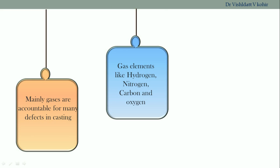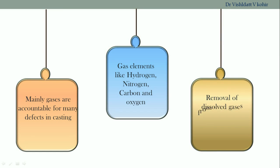If they are not removed, they are going to recombine to form their molecules in the solid phase of the metal. In doing so, they form defects like blowholes and pinholes. Therefore, it is necessary to remove these elements from the molten metal. The process of removal is called degassing, and the method which we adopt is called degasification.